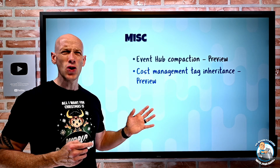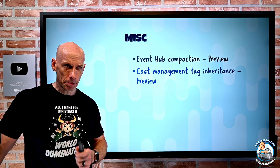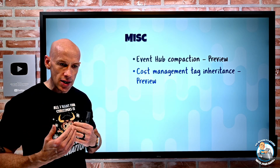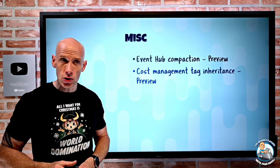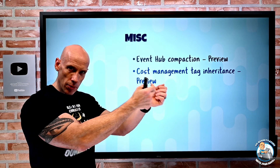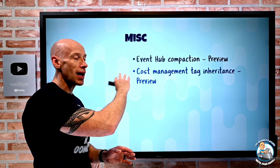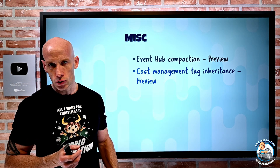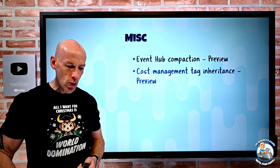Cost management tag inheritance: a tag set on a subscription or resource group will now be inherited by the resources inside for the purpose of usage billing. This applies to usage records for billing, show back, and charge back — it's not ARM copying the tag to the resource, it's only in the billing reporting. This is really useful because previously you'd have to use Azure Policy to copy tags. Now if you're only doing it for billing purposes, you don't need to — and you can even override with the resource group's or subscription's value if preferred.